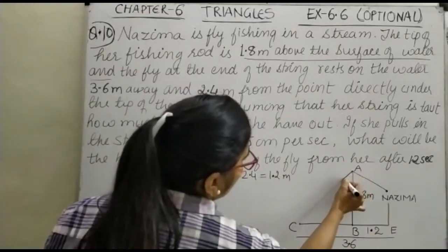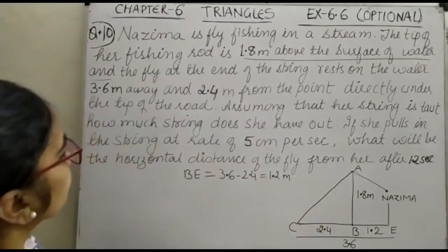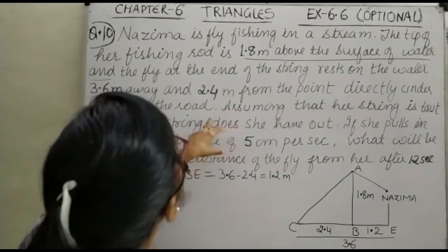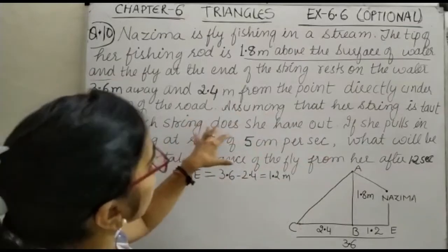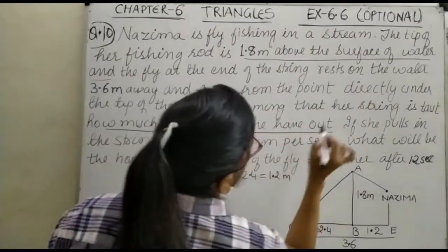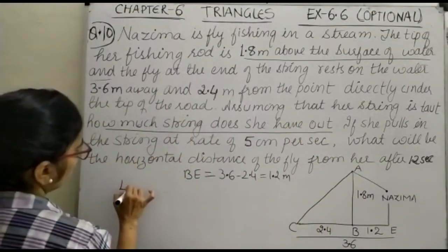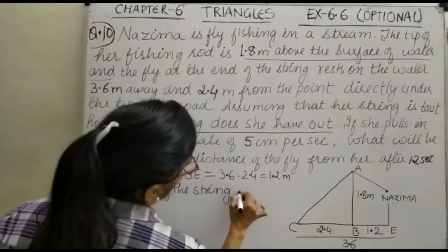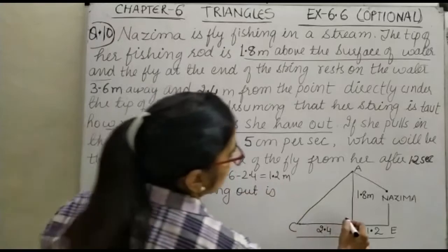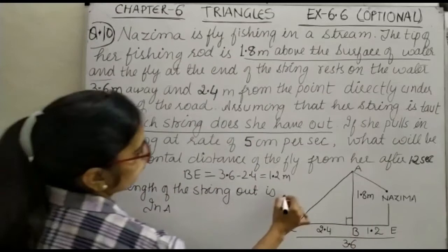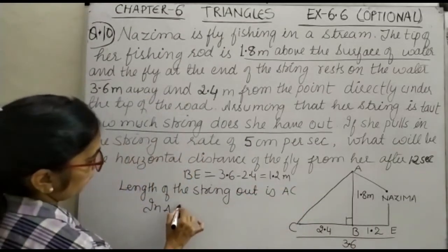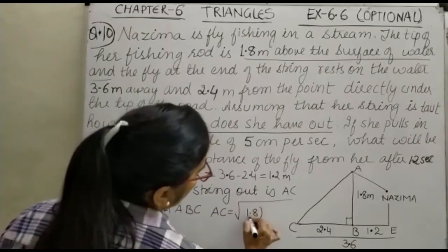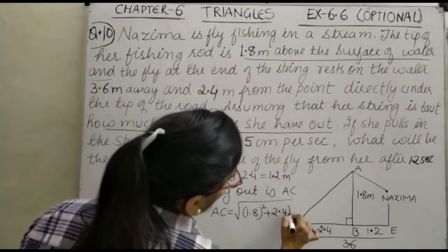This is the length of the string, AC. Now, assuming that her string is taught, how much string does she have out? So we will find out AC. Length of the string out is, you can see this is your 90 degree. So we can take in triangle ABC.